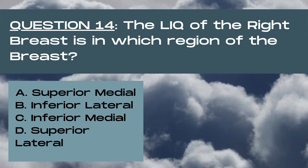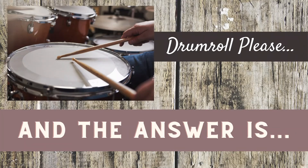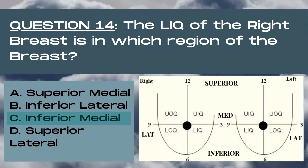Question 14. The lower inner quadrant of the right breast is in which region of the breast? A superior medial, B inferior lateral, C inferior medial, or D superior lateral? The answer is C, inferior medial. In the right breast, the inferior medial segment triangulates to the lower inner quadrant and has clock positions from 3 o'clock to 6 o'clock.